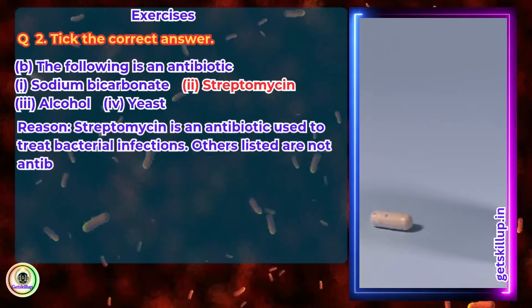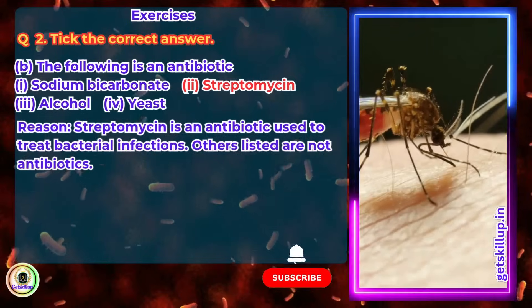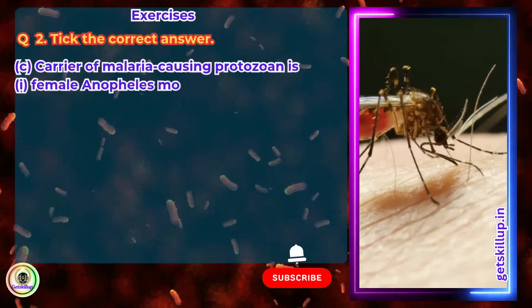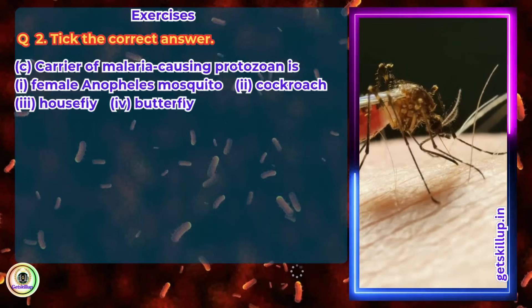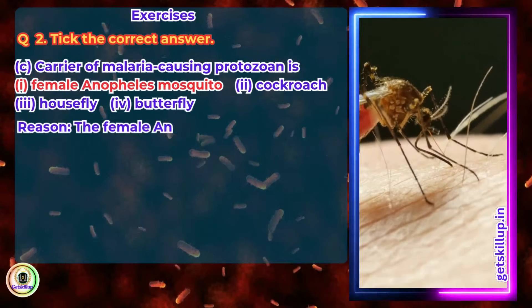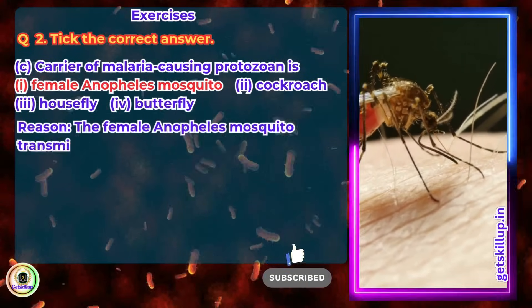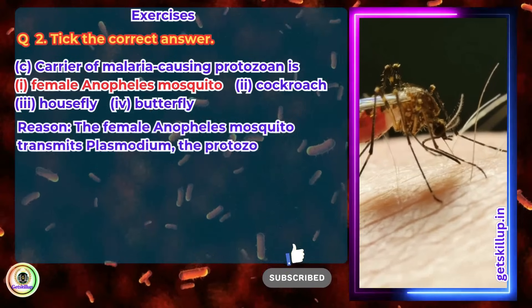Carrier of malaria-causing protozoan is? Answer: Female Anopheles mosquito. Reason: The female Anopheles mosquito transmits Plasmodium, the protozoan causing malaria.